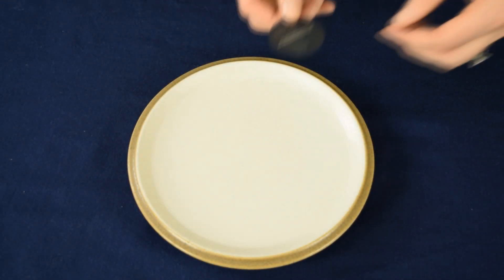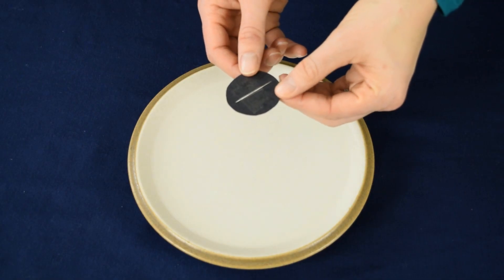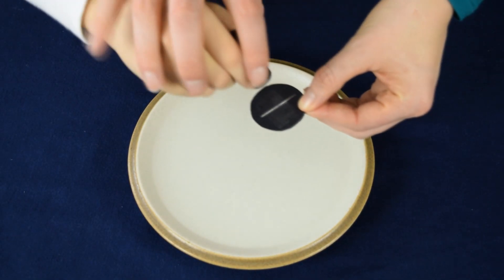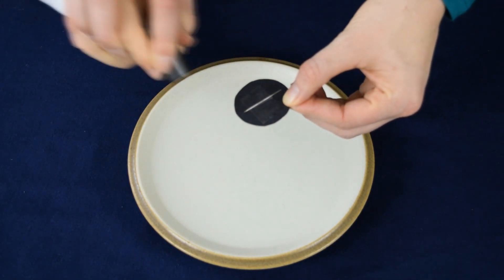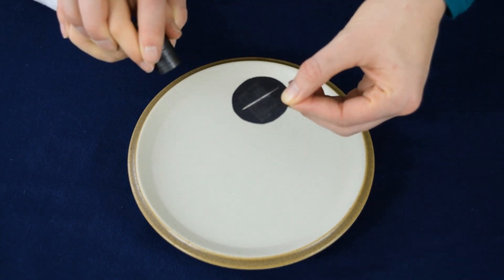Then you're going to take your piece of paper with the needle taped on it and you're going to take a magnet and you're going to rub the magnet on the needle in the same direction about 20 times.